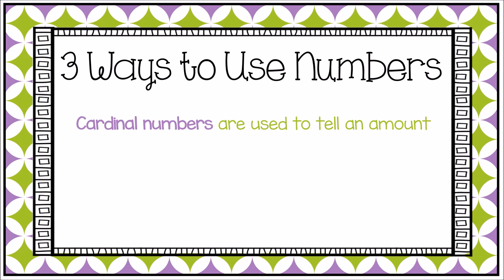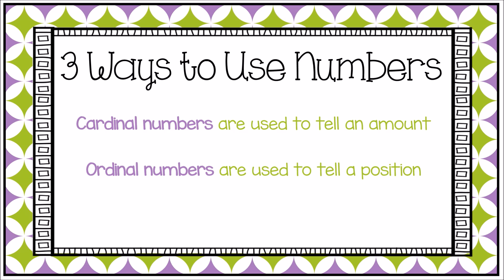Cardinal numbers are used to tell an amount or count something. For example, the number four tells the amount of people in my family. Ordinal numbers are used to tell a position or an order. For example, the number one could represent first, as in, I was the first person to wake up every day this summer.